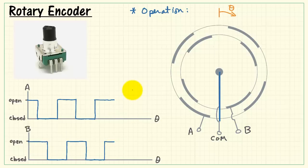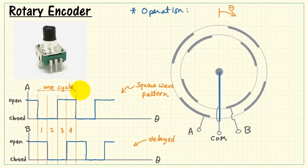These switching patterns look like square waves. The interesting thing about the pair of square waves is that they end up being shifted with respect to each other. The B waveform looks like it's a delayed version of the A waveform.